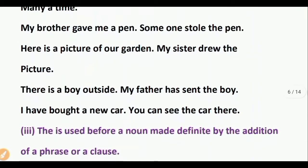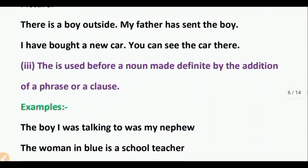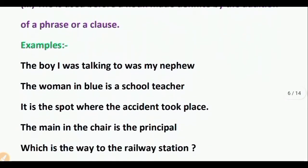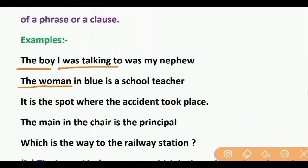Point 3: 'The' is used before a noun made definite by the addition of a phrase or a clause. When we use a phrase or a clause to define the noun, we use the definite article 'the' before it. Examples: the boy in blue is talking to my nephew — 'the boy I was talking to' is a phrase identifying the boy. The woman in blue is a cool teacher. It is the spot where the accident took place. The man in the chair is the principal. Which is the way to the relay station?